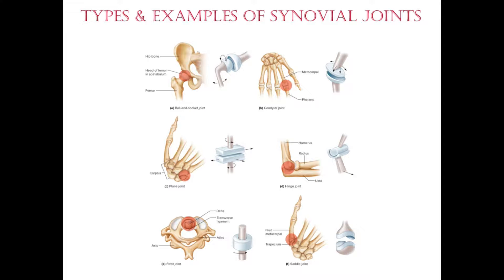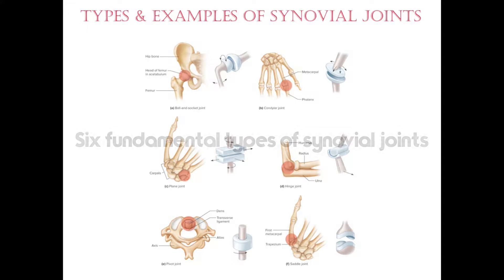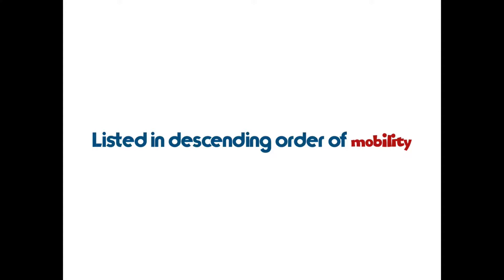Welcome to another video for anatomy and physiology. In this video we're taking a look back at the lecture we had last week with the synovial joints. We're going to be looking at all six types of synovial joints and examples of where they can be found in the body. We'll list them in descending order of mobility, starting with the joint that has the most range of motion and working down to the least.